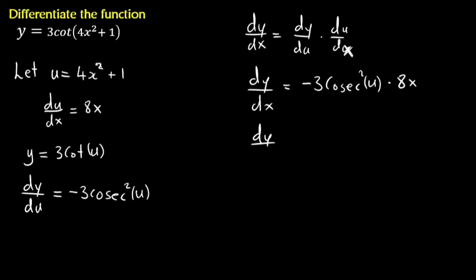So dy dx, if I multiply the values that we have, we'll have negative 24, negative 24x, multiplying with cosec square, not x but u, cosec u. But remember what u is. We made this assumption, u is 4x squared plus 1. So let's bring back u by replacing u with what we have there.